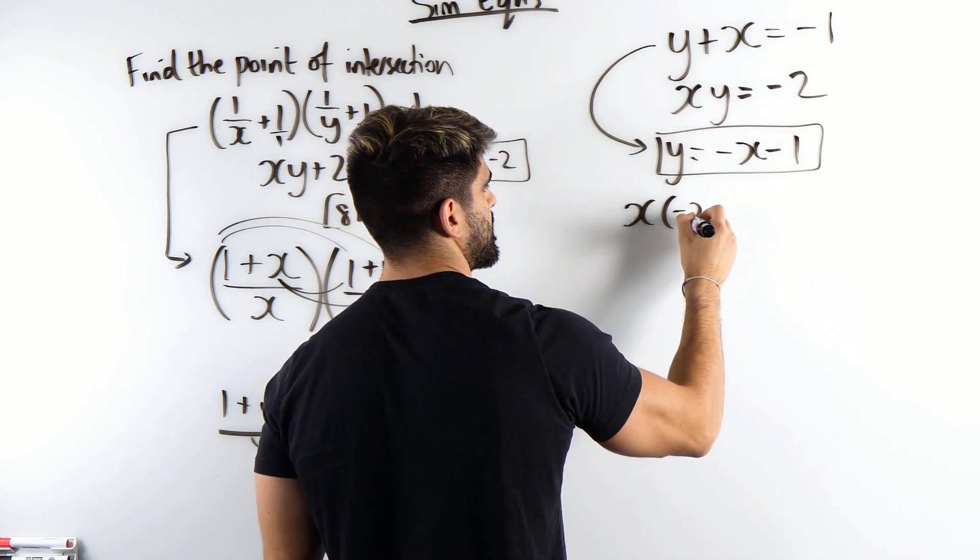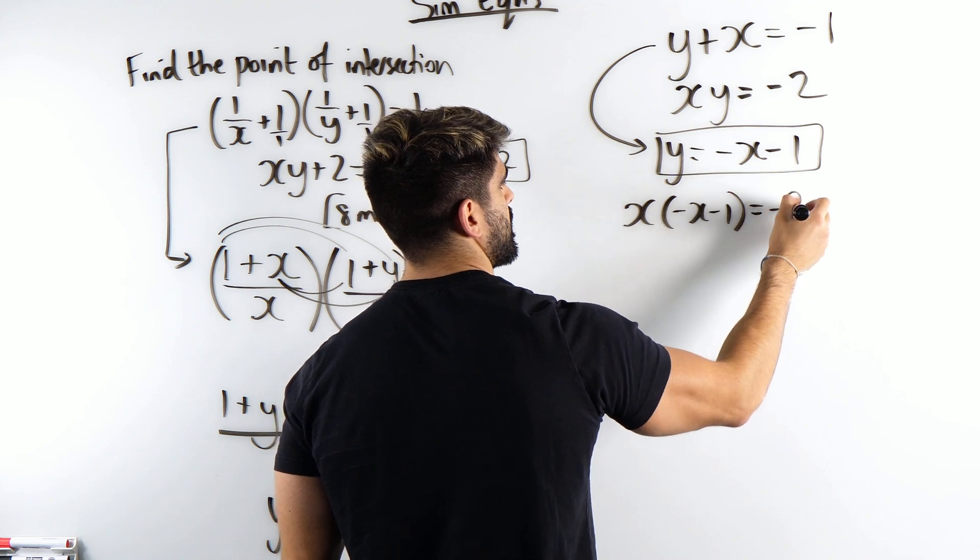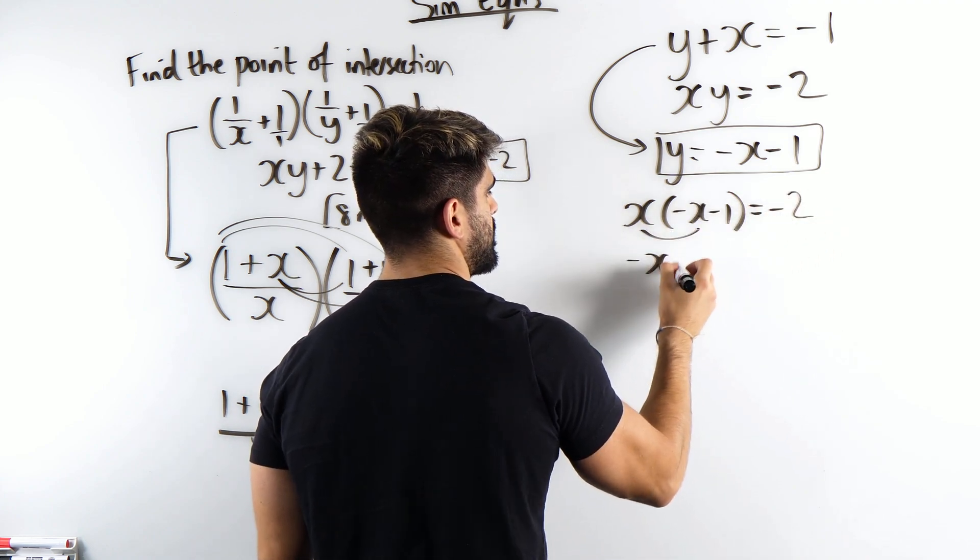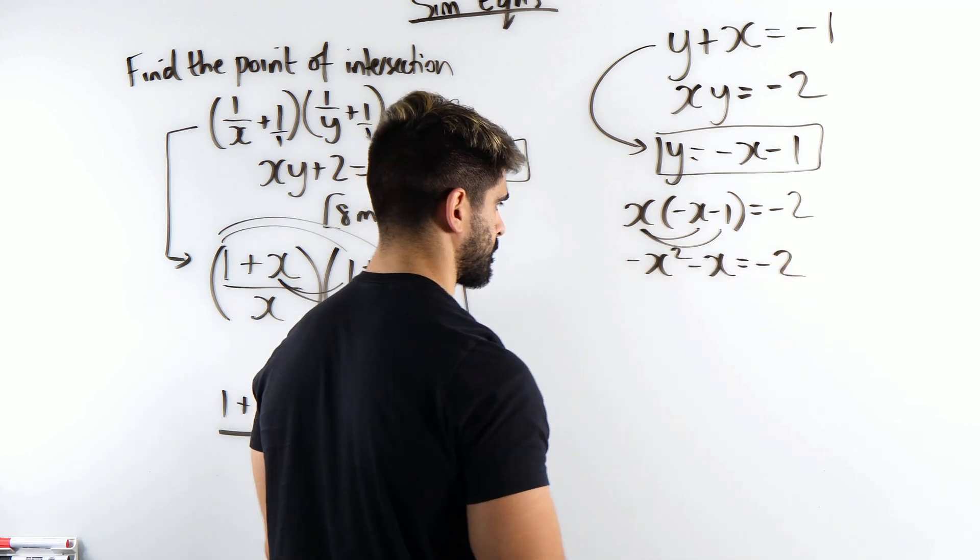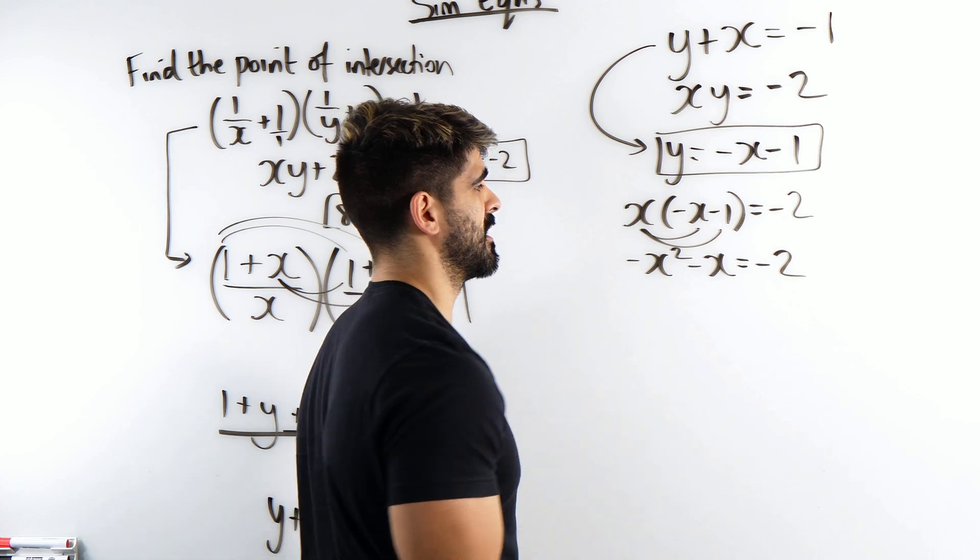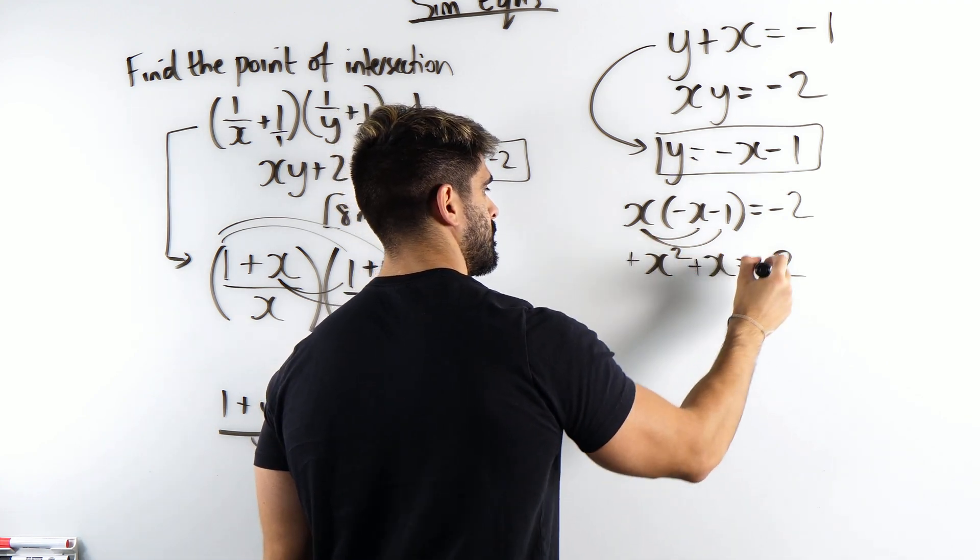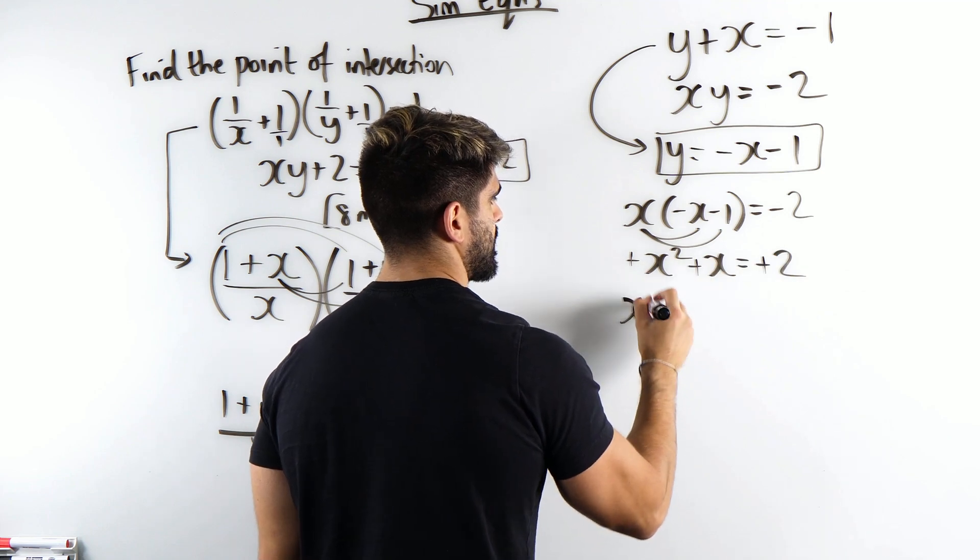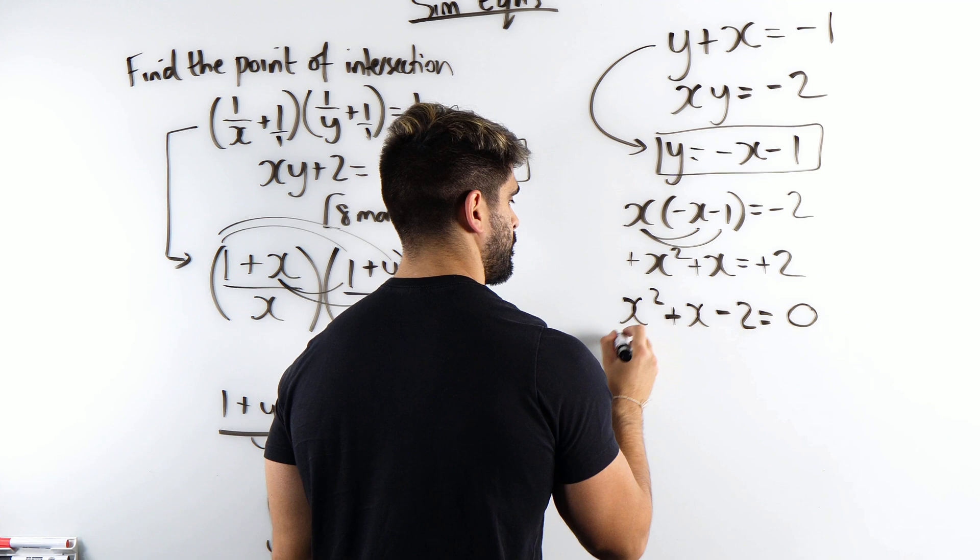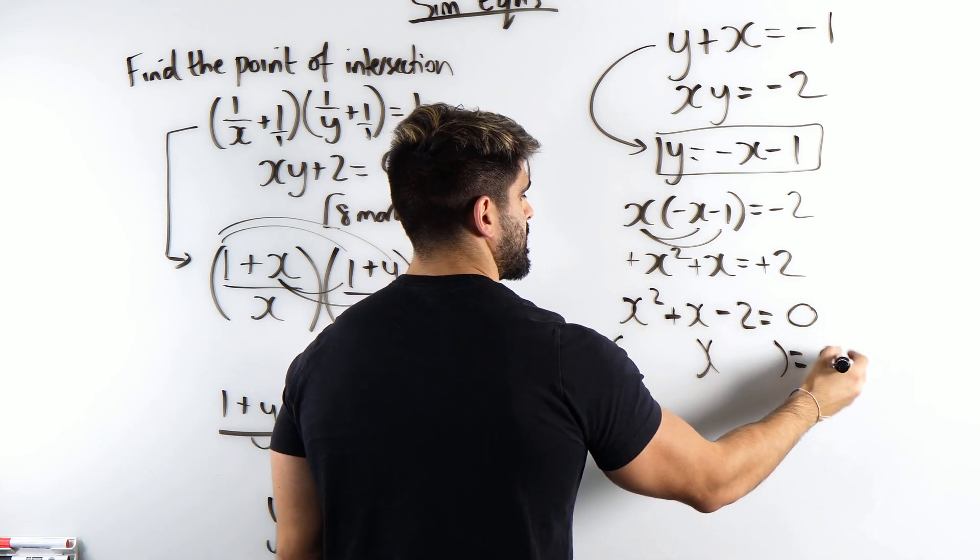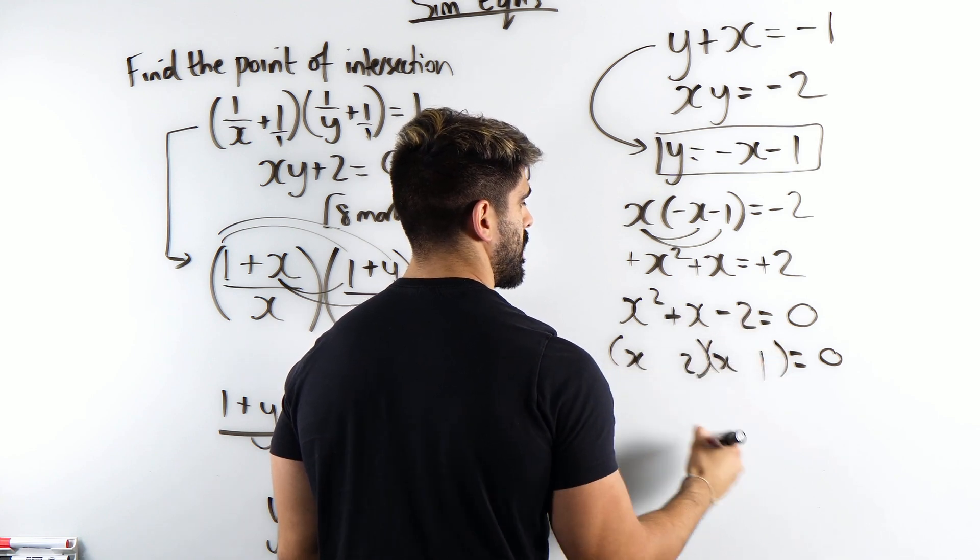So we're going to get x lots of minus x minus 1 is minus 2. Minus x squared minus x is minus 2. You can actually times through by minus 1 and then bring that over. So we get x squared, x, bring that over minus 2.